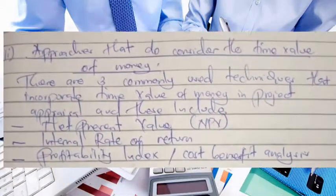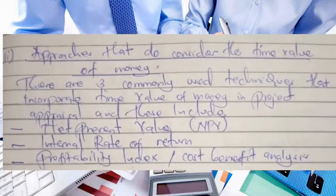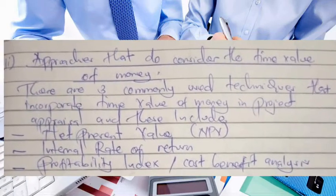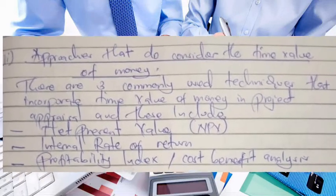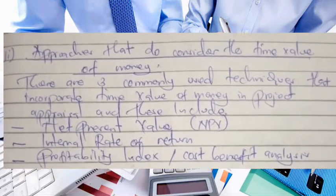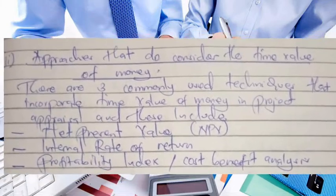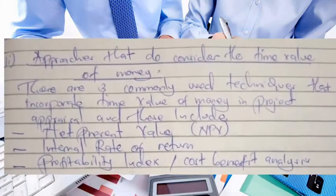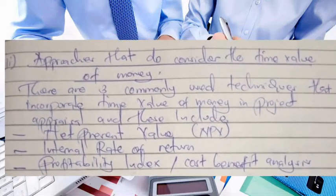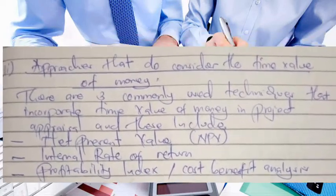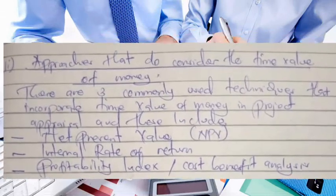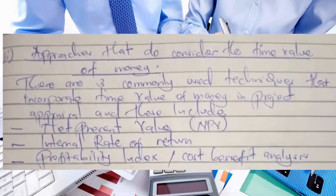The second classification under formal analysis covers approaches that do consider the time value of money. The three commonly used techniques that incorporate time value of money in project appraisal are: net present value (NPV), internal rate of return (IRR), and profitability index, also known as cost-benefit analysis.